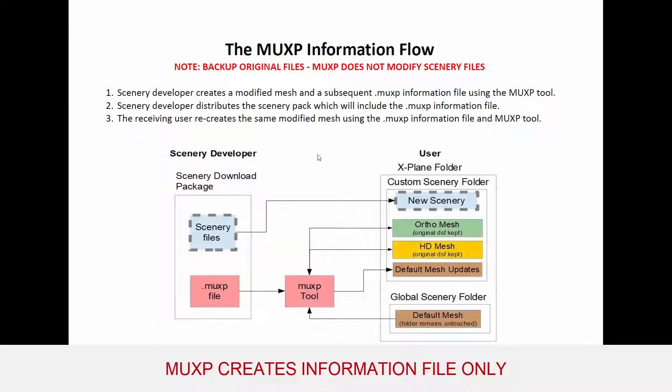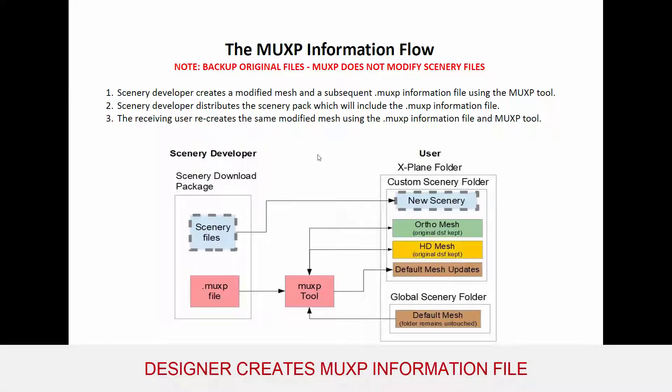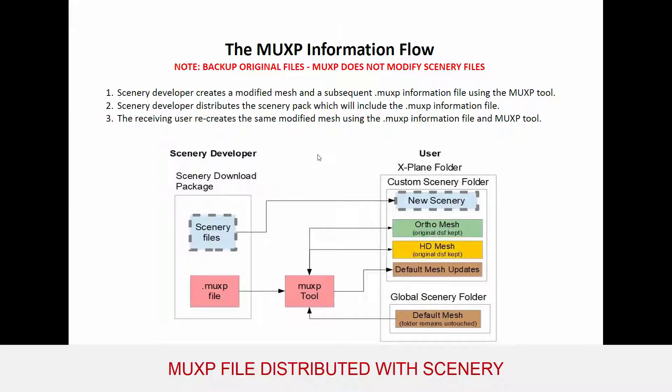The Max information flow — a big red note: back up your original files. Max does not modify scenery files, but just to be on the safe side. In a nutshell, it works like this: a scenery developer creates a modified mesh and scenery and a subsequent .max information file using the Max tool, then distributes a scenery pack which will include the .max information file. The receiving user on the other side of the world then creates the same modified mesh using the .max information file and the Max tool.